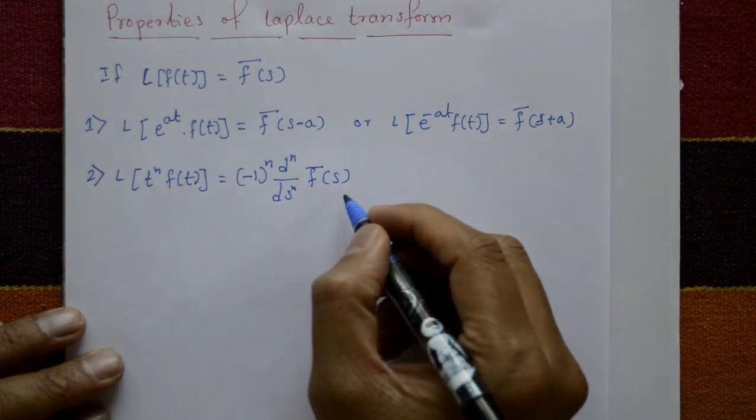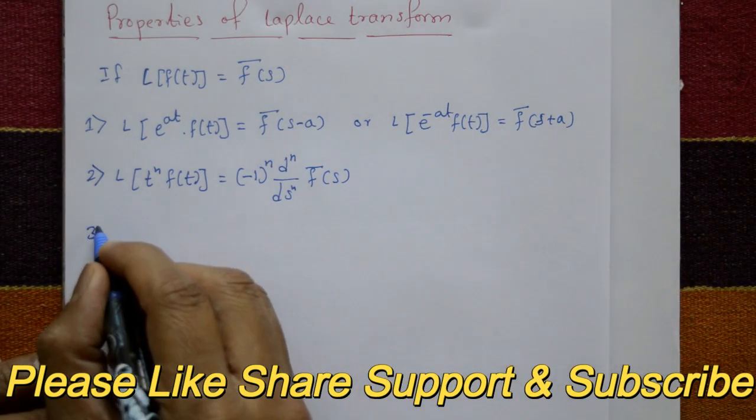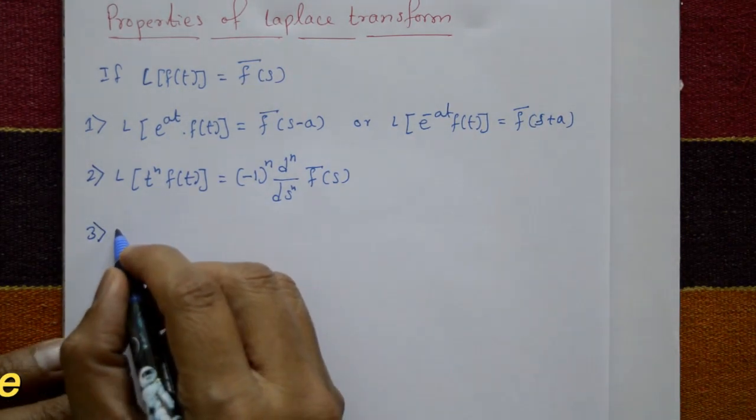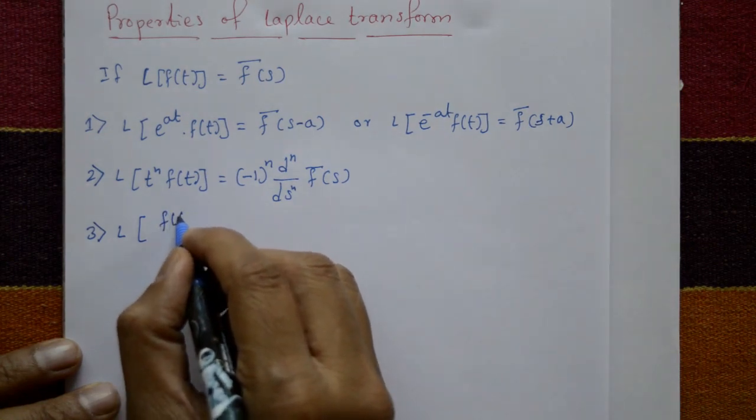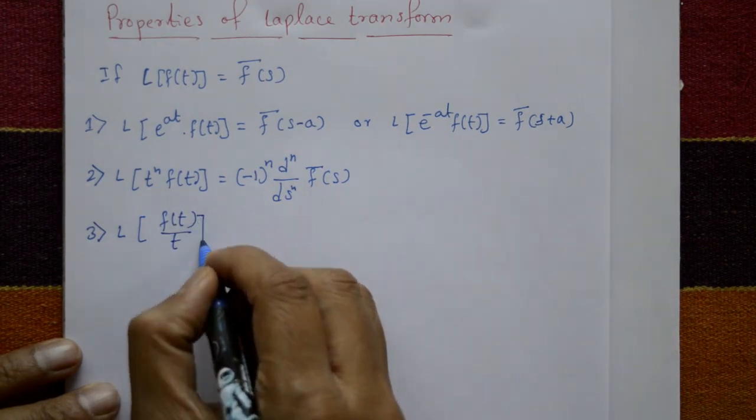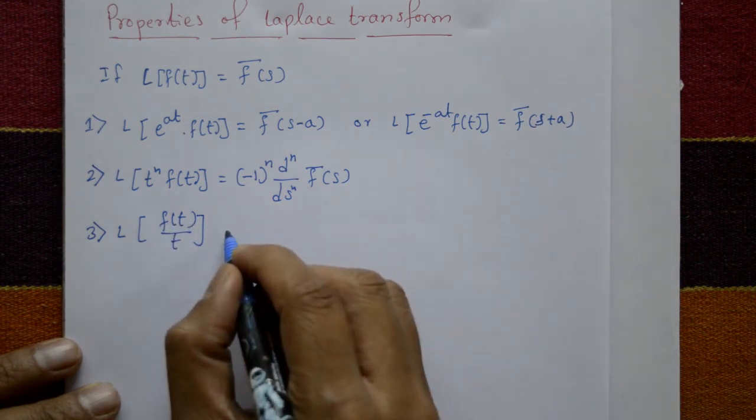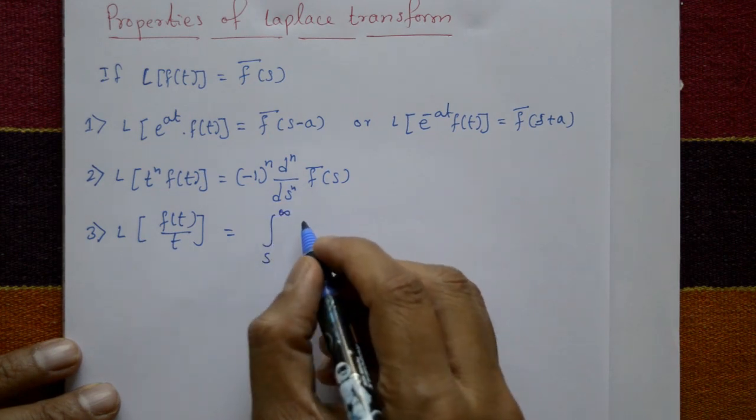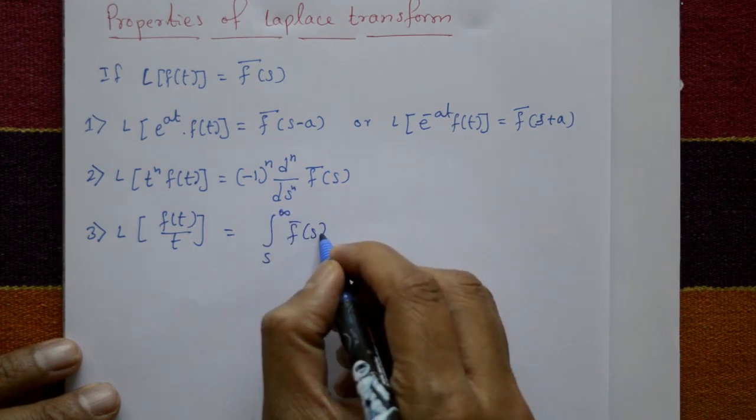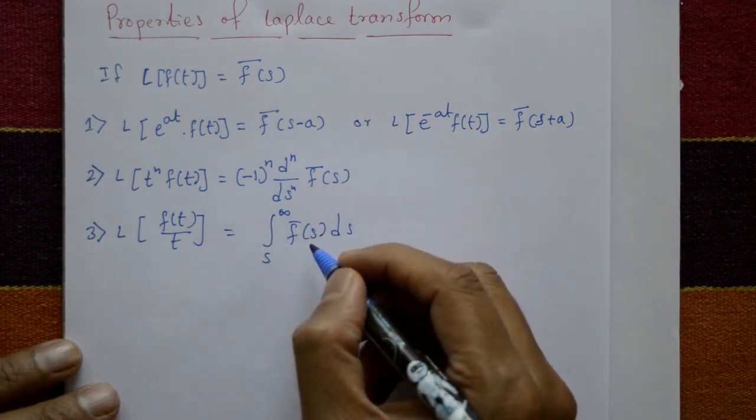The third property is very simple: Laplace of f(t) divided by t is equal to the integration from s to infinity of f̄(s) with respect to s. These three are properties of Laplace transform.